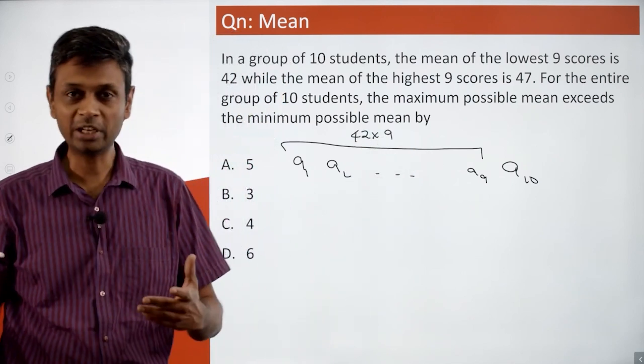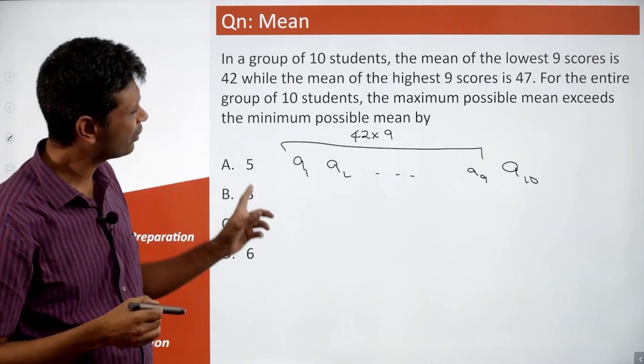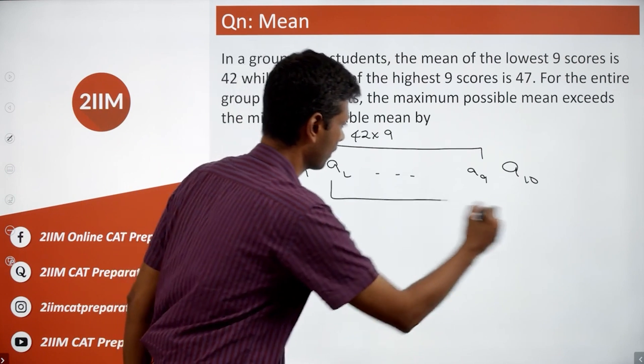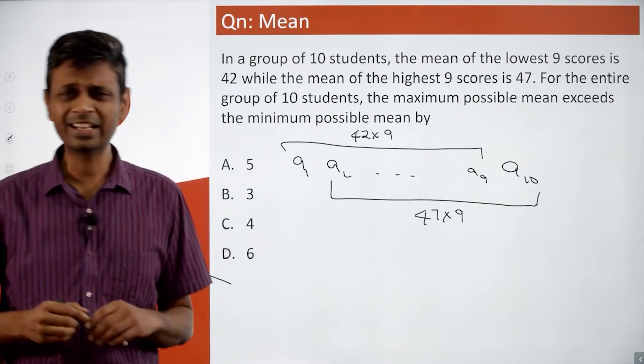I want to deal with the total rather than the mean. The sum of the first nine is 42 times 9. The sum of the last nine is 47 times 9. There's a very simple, powerful idea here.